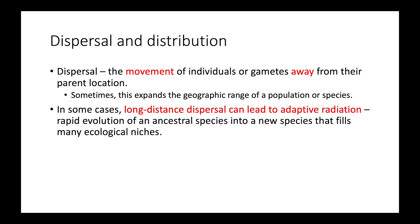In some cases, long-distance dispersal can lead to something called adaptive radiation. Adaptive radiation is the rapid evolution of an ancestral species into new species that then fill multiple different ecological niches. It would be like they moved into a new environment and were able to adapt and fill distinct niches that previously weren't filled.